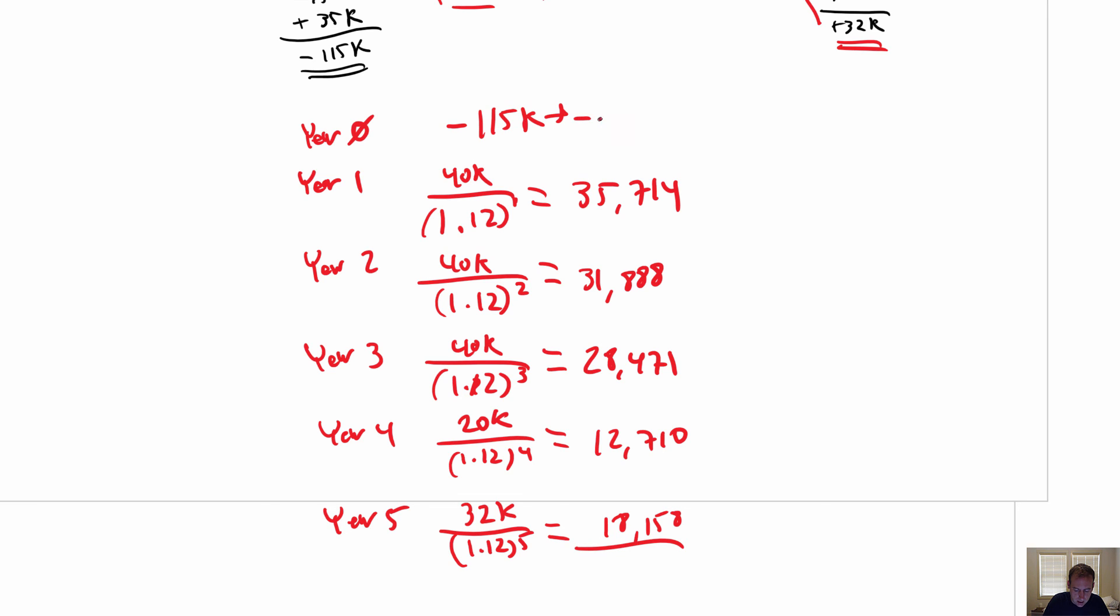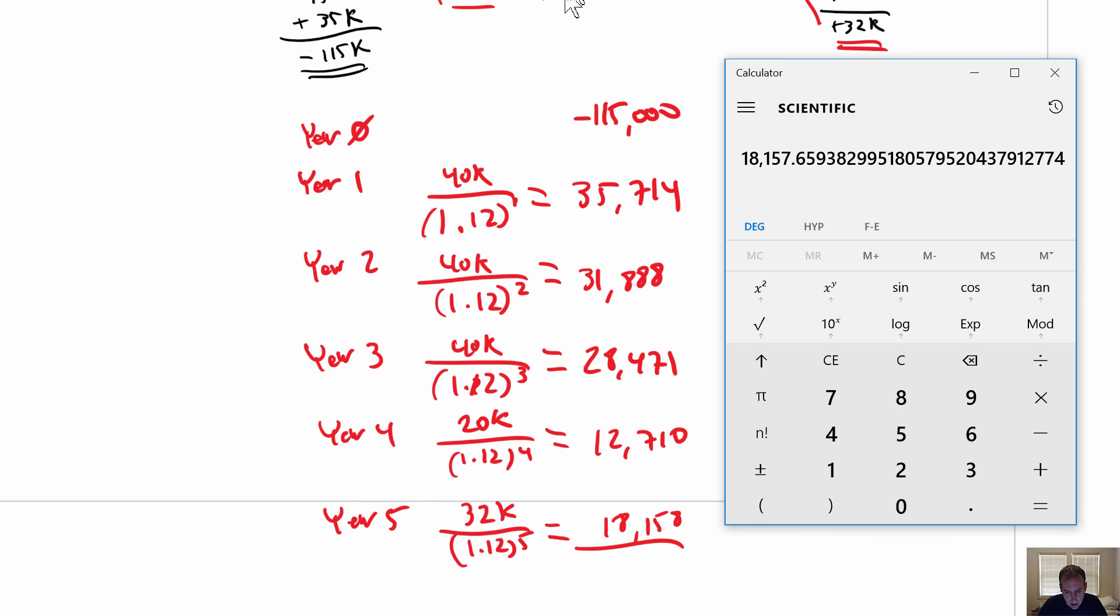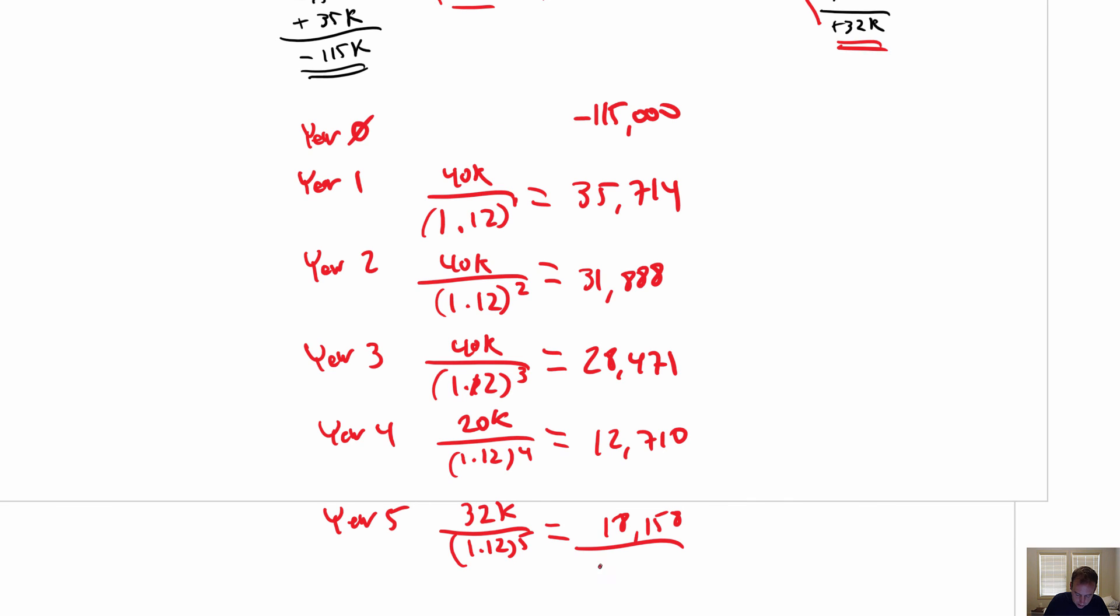Okay. So, and don't forget, we have this negative $115,000. So after all of that, I get a net present value of $11,941. That is my net present value.